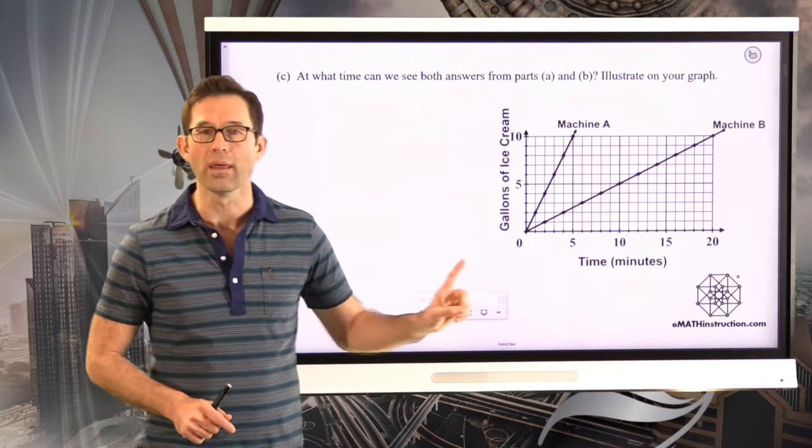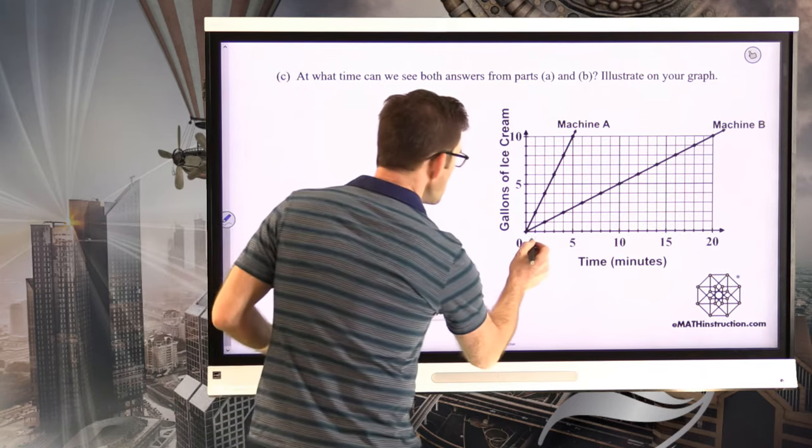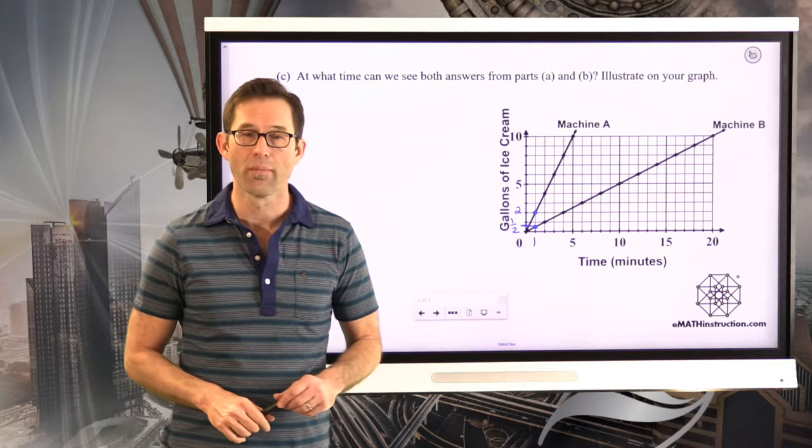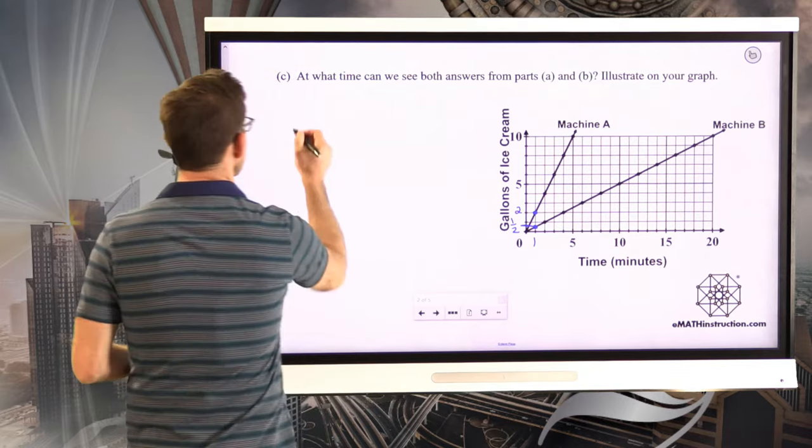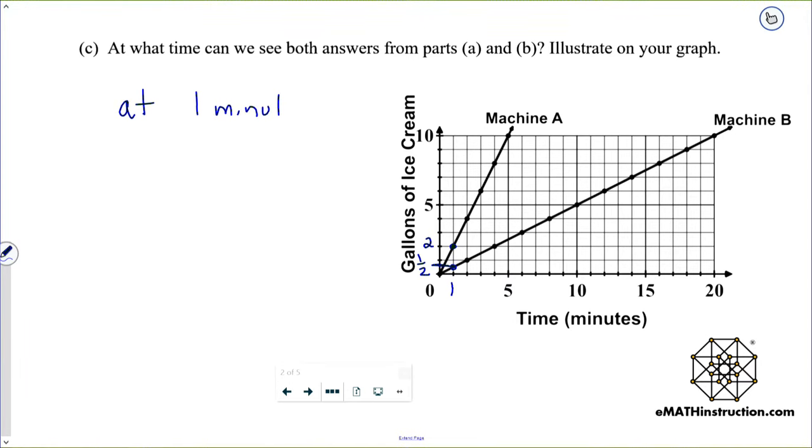Well, all we have to do is go to one minute. We simply need to go out to one on this axis. Now, this is going to be a little bit hard for you to see, but at one on this axis, if we look at machine A, we're at two gallons per minute. And if we look at machine B, and this is a little bit trickier, we see we're down here at one-half gallon per minute. So we can always see the unit rates at one minute or one hour or one whatever on the x-axis.